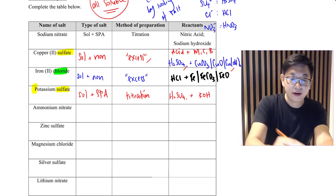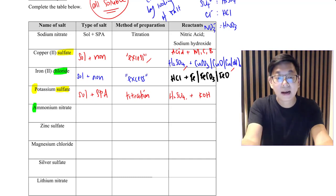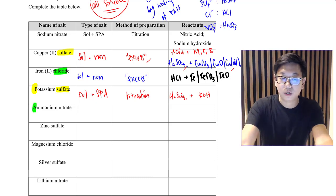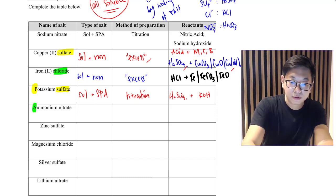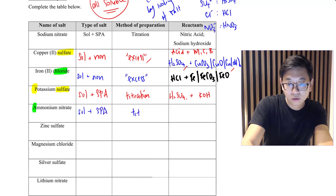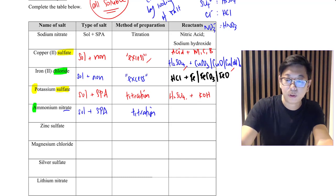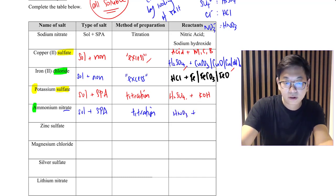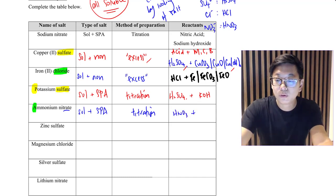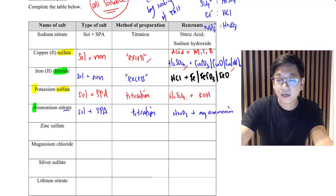For ammonium nitrate — it is soluble SPA, so we use titration. Because it is a nitrate, we use nitric acid (HNO₃). And because it is an ammonium salt, we use aqueous ammonia as the alkali. That is how you choose reactants.